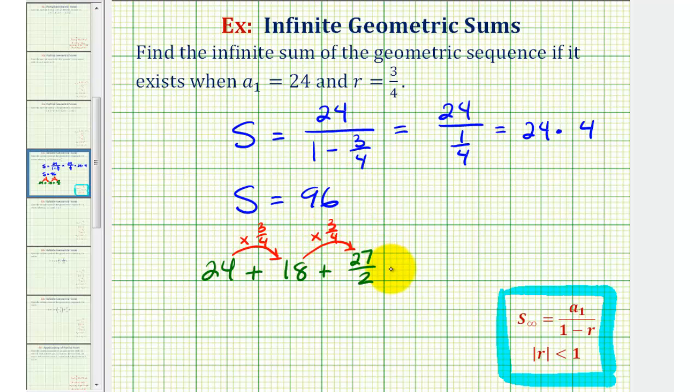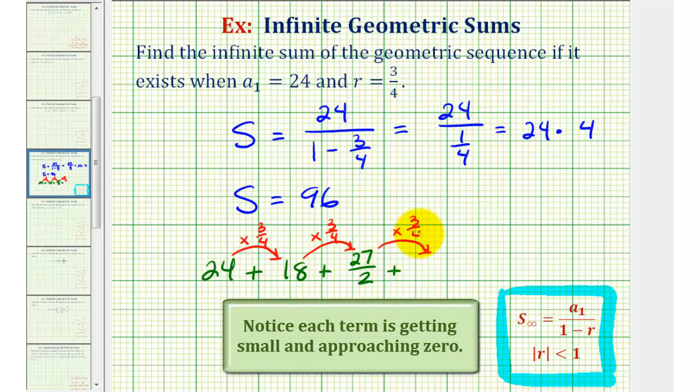Let's go ahead and find one more term. Twenty-seven halves times three-fourths would be 10.125, or 81 eighths.